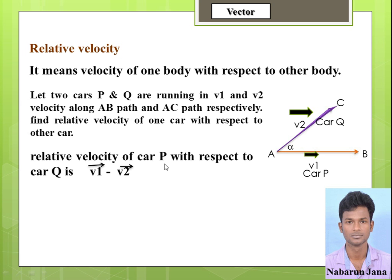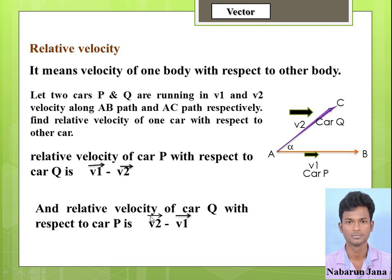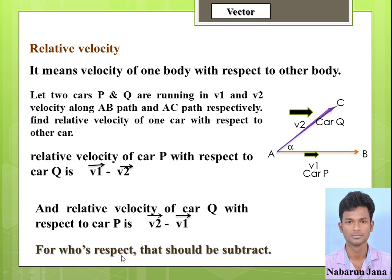The relative velocity of car P with respect to car Q is V1 minus V2, and the relative velocity of car Q with respect to car P is V2 minus V1. For whose respect we are finding, that velocity should be subtracted. So for relative velocity of P with respect to Q, the velocity of Q is V2, so V2 is negative. Similarly for Q with respect to P, the velocity of P is V1, so V1 is negative.